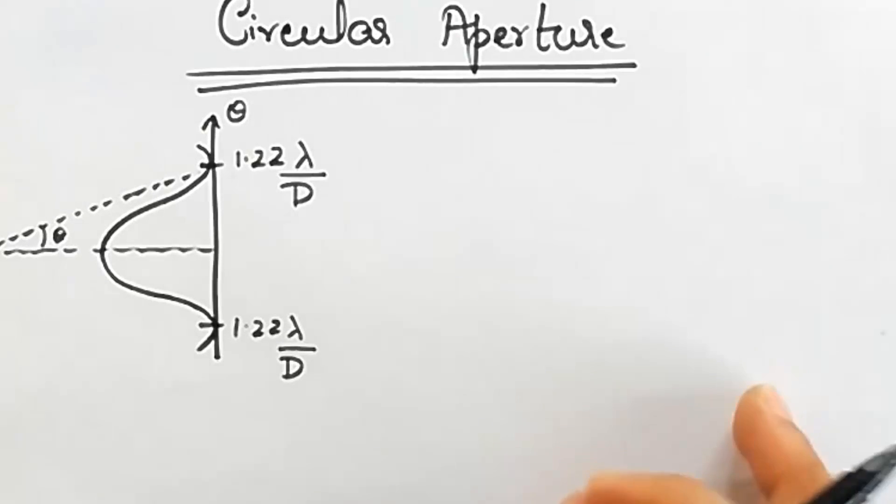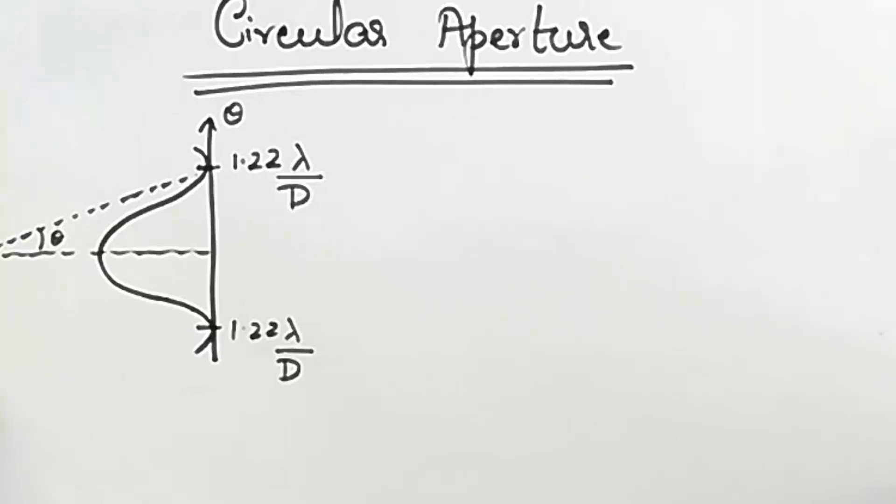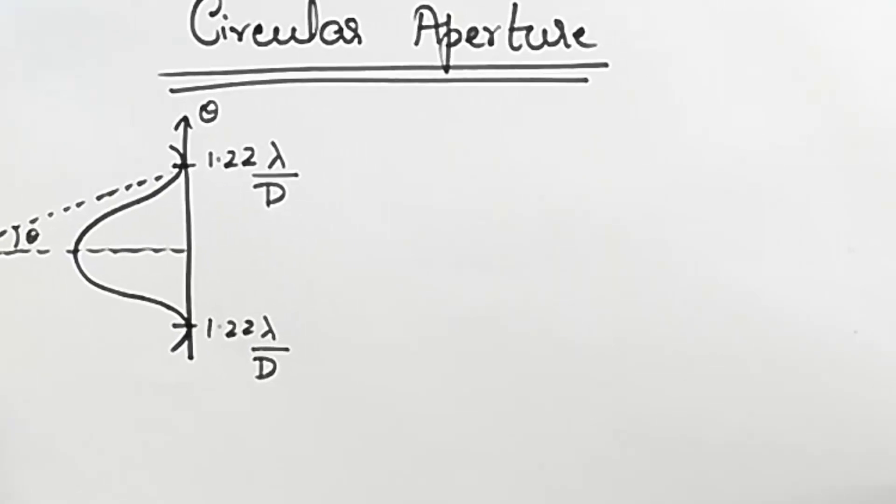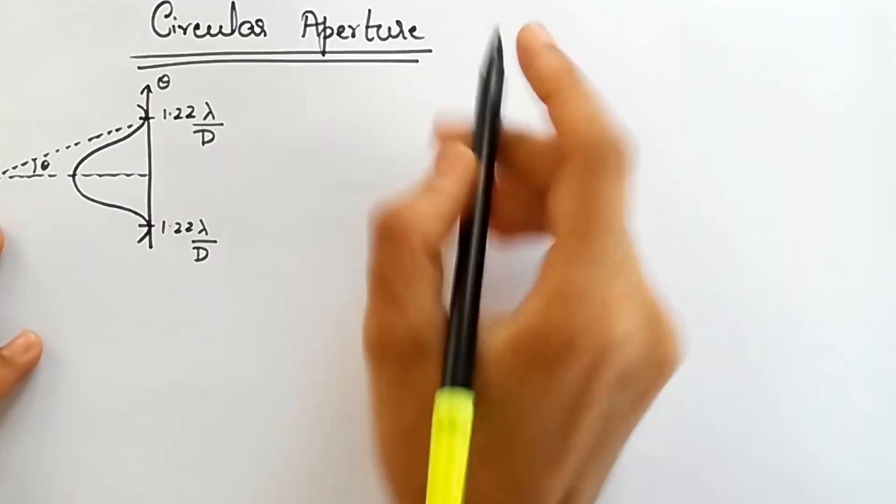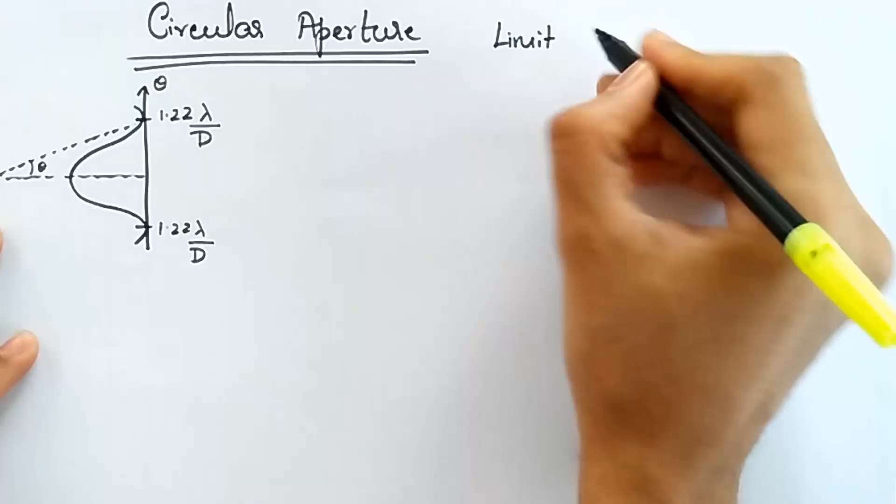That's all that we have to worry about when it comes to circular aperture. How this comes is not important. It's rather complicated derivation. But now we can use this and we can talk about the interesting phenomenon that is called the limit of resolution of any optical instrument.